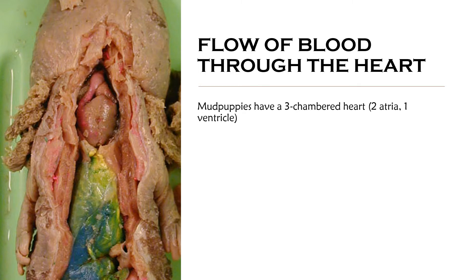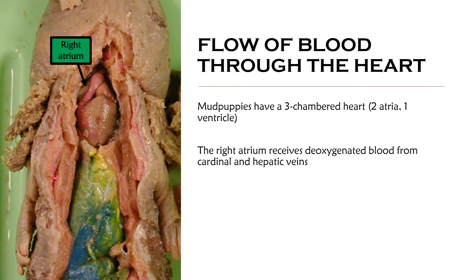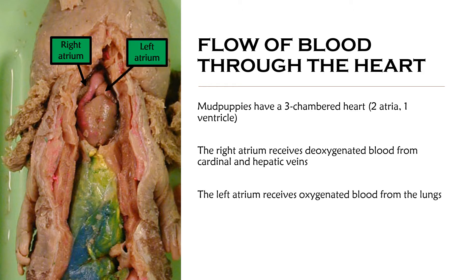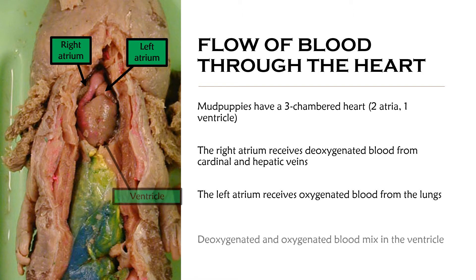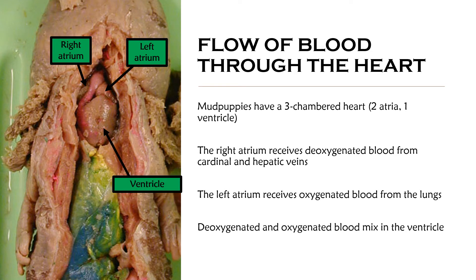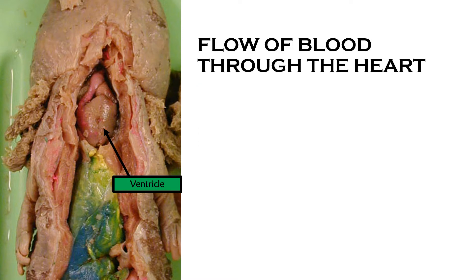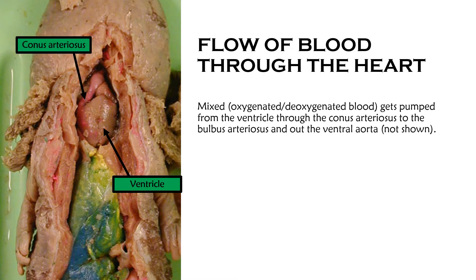We're going to begin with the flow of blood through the mud puppy heart. Mud puppies have a three-chambered heart: two atria and one ventricle. The right atrium receives deoxygenated blood from the cardinal and hepatic veins. The left atrium receives oxygenated blood from the lungs, because mud puppies have an underdeveloped lung they use under certain circumstances, such as when water quality is really bad. The deoxygenated and oxygenated blood from the right and left atrium mix in the ventricle, and that mixed blood is pumped from the ventricle through the conus arteriosus and into the bulbous arteriosus.